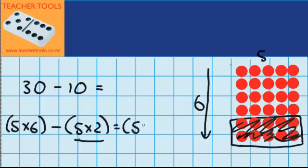5 groups of 4. And I know that the answer to 5 groups of 4 is 20. So 30 minus 10 is 20.